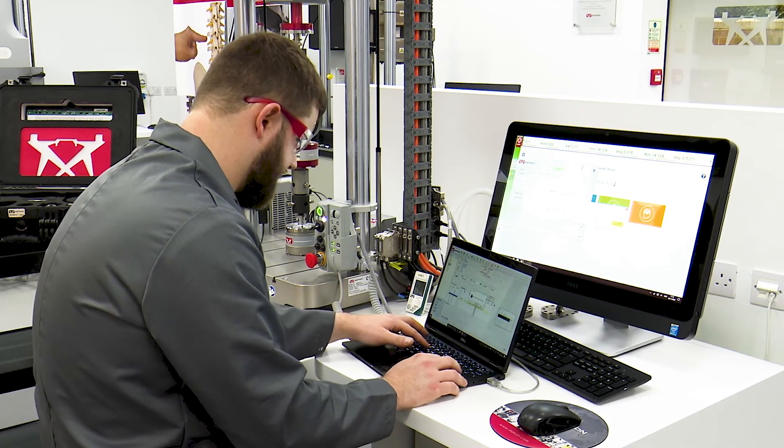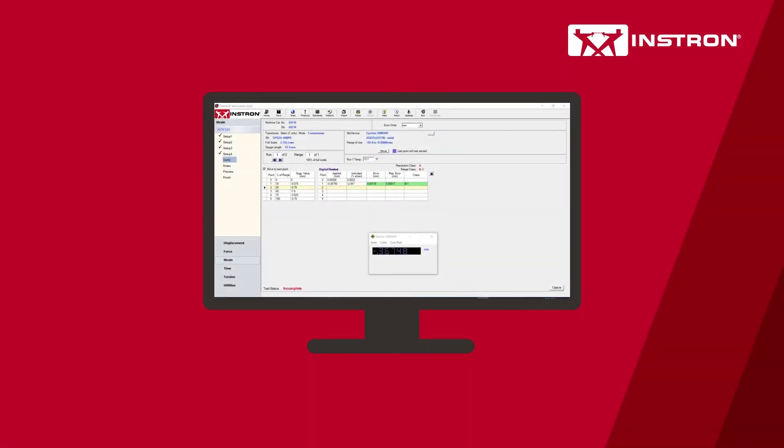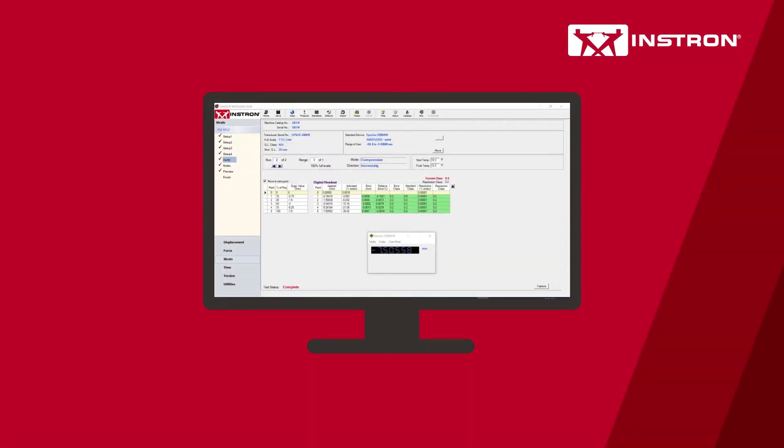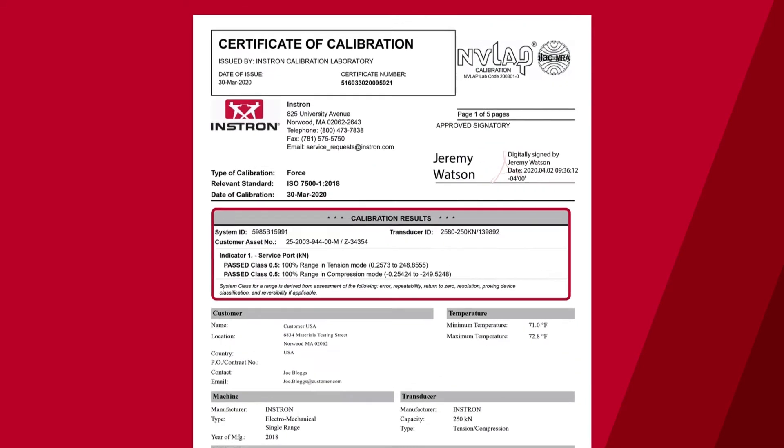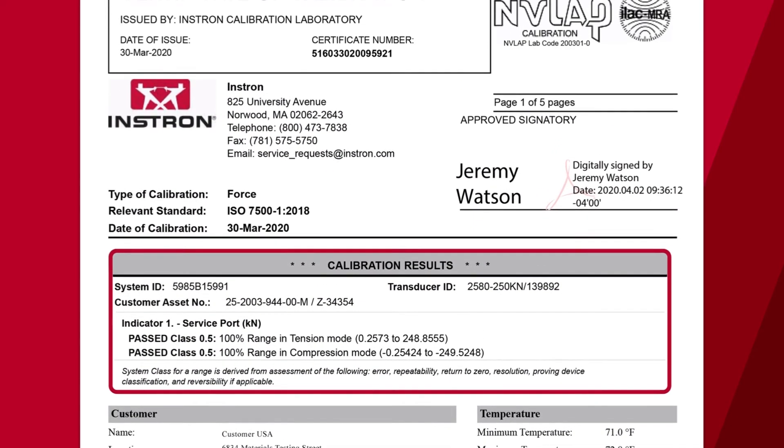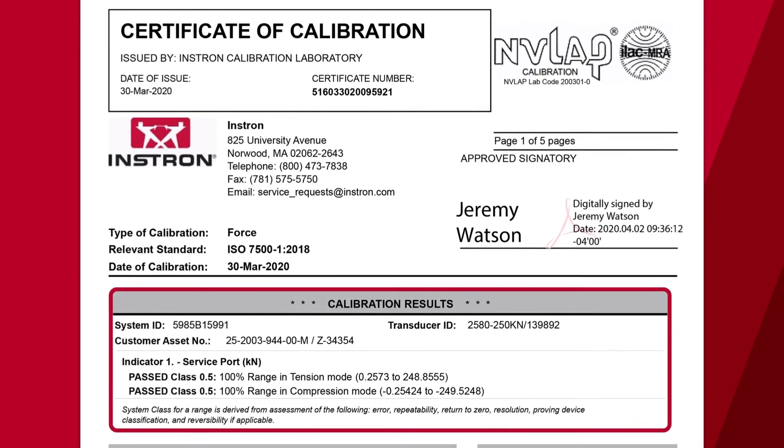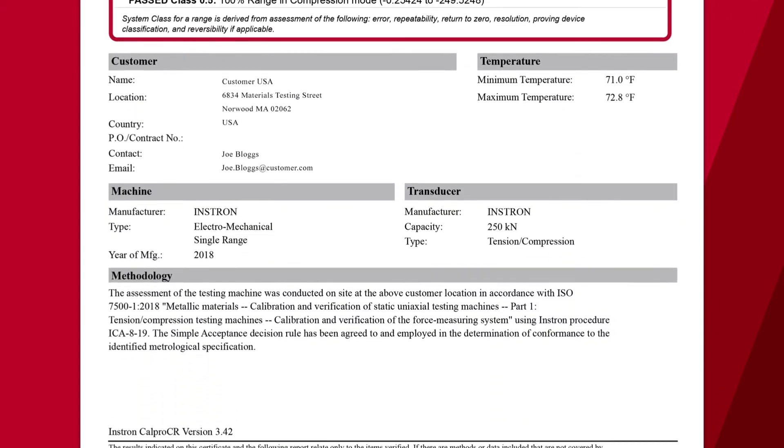On completion of your calibration, our CALPRO software generates a certificate of calibration that contains crucial evidence of test system integrity and validity of a calibration. Your INSTRON calibration certificate will give you full confidence in your system and the data it produces while standing up to the rigors of audit.